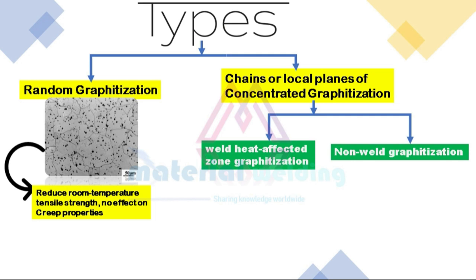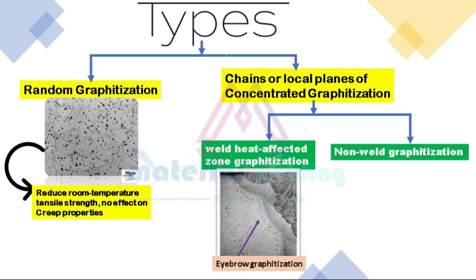Chains or local planes of concentrated graphite nodules can be further classified. The first is weld heat affected zone (HAZ) graphitization. This is most frequently found in the heat affected zone adjacent to welds, in a narrow band corresponding to the low-temperature edge of the HAZ. In multipass welded butt joints, these zones overlap each other, covering the entire cross section. A graphite nodule can form at the low-temperature edge of these HAZs, resulting in a band of weak graphite extending across the section. Because of its appearance, this graphite formation within the HAZ is called eyebrow graphitization.